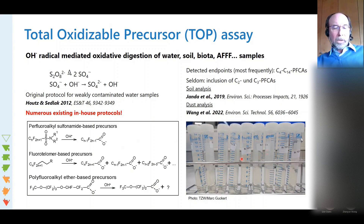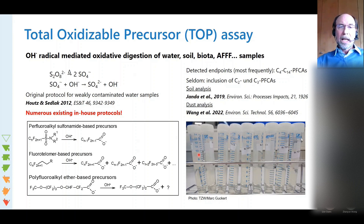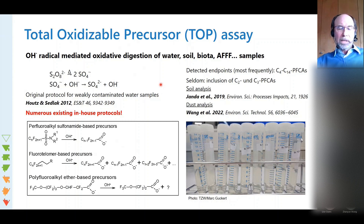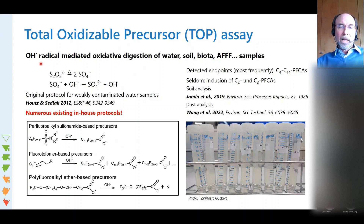Let's come to my favorite: the total oxidizable precursor assay. This is based on OH radical-mediated oxidative digestion of water. Soil, biota, and AFFF samples have also been measured in the past. The principle is that the oxidizing agent - OH radicals - is formed from peroxodisulfate in aqueous solution by thermolysis of the peroxodisulfate and further reaction of the sulfate radicals with hydroxyl ions.